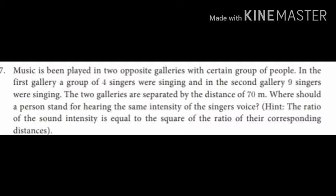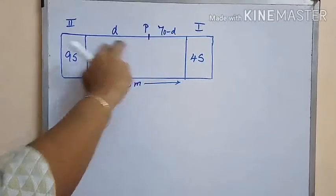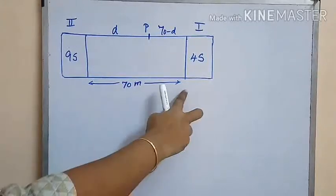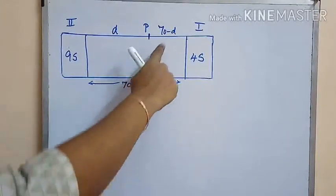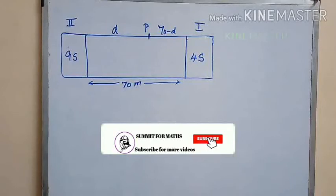Music has been played in two opposite galleries with a certain group of people. In the first gallery, a group of four singers were singing, and in the second gallery, nine singers were singing. The two galleries are separated by a distance of 70 meters. Where should a person stand for hearing the same intensity of the singers' voice? Let P be the position of the person standing at a distance d from the second gallery having nine singers. Since the distance between the two galleries is 70 meters, the distance of the person from the first gallery is 70 minus d.